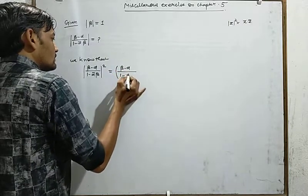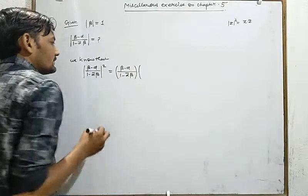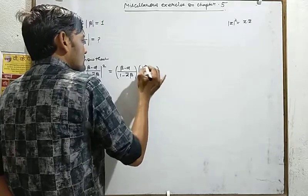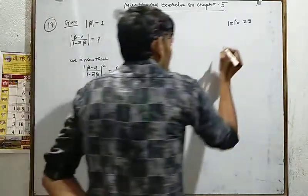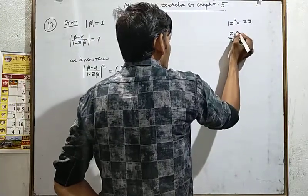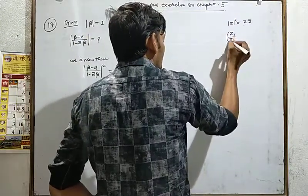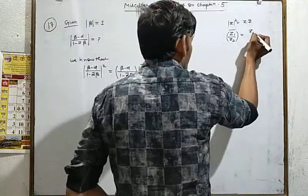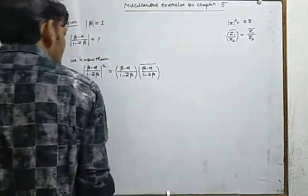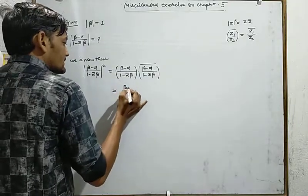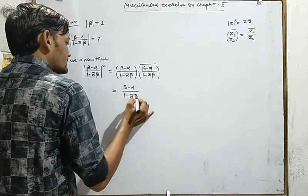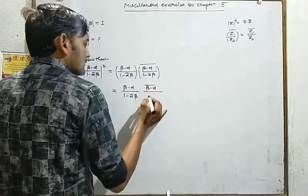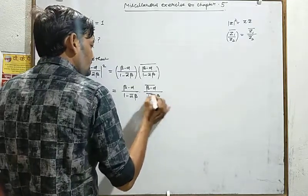यह value हो जाएगी: (beta minus alpha)/(1 minus alpha-bar beta) multiplied by the conjugate of (beta minus alpha)/(1 minus alpha-bar beta). Property है कि z1 upon z2 का bar होता है z1-bar divided by z2-bar। तो value आएगी: (beta minus alpha)/(1 minus alpha-bar beta) into (beta-bar minus alpha-bar)/(1 minus alpha-bar beta) का bar।